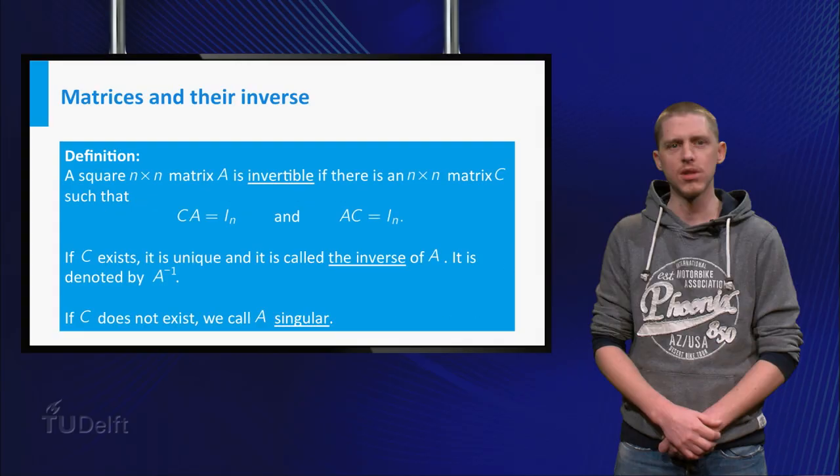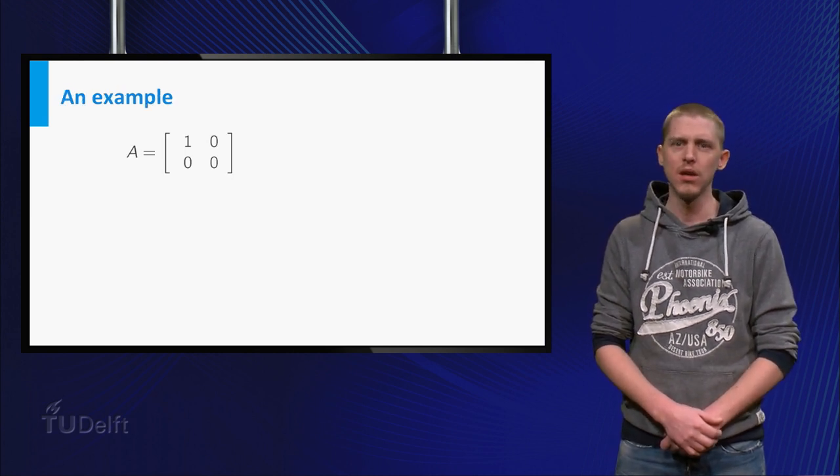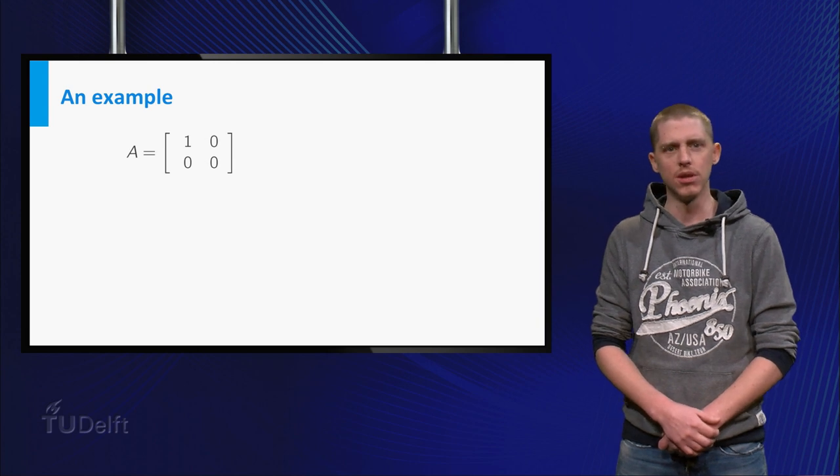If C does not exist, you say A is singular. Let's try to find an inverse of the matrix A equals 1, 0, 0, 0.